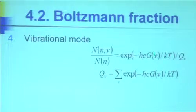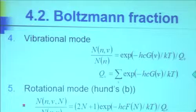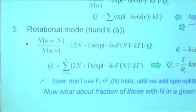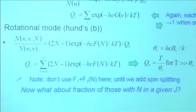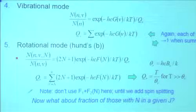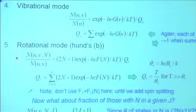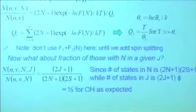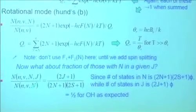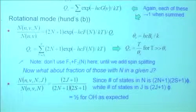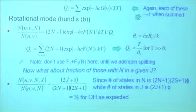The vibrational fraction is: e to the minus h-nu over kT times G over q — that's the easy one. For the rotational part, instead of having 2J plus 1, I now get 2N plus 1. q_rot is T over theta_r with no factor of 2 because it's asymmetric. The fraction for a given N in a given J works out to be about a half — that's what you expect, because for every N there are two J's, roughly half in each.